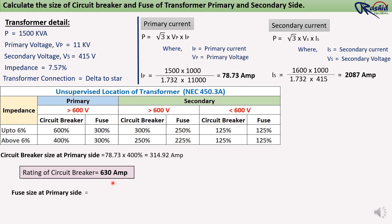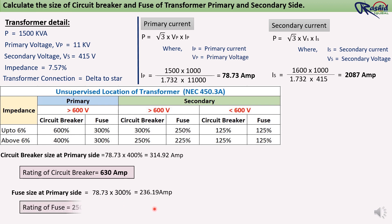For fuse calculation, we multiply 300% by the primary current: 78.73 × 300% = 236.19 ampere. So the fuse rating we will use here is 250 ampere.